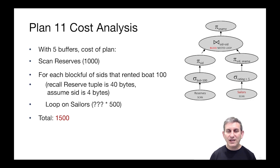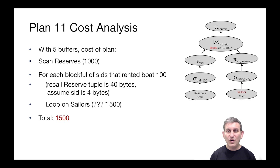Out of the projection we're taking every tuple, which is 40 bytes wide, and we're keeping only one integer column, which is four bytes wide. So we're keeping only one tenth of the width of each tuple. Out of the one one-hundredth of the tuples we're keeping one tenth of their size. So we take our thousand pages, divide by a hundred for the selection, divide by ten for the projection — we've got only one disk page worth of SIDs to input into this join.